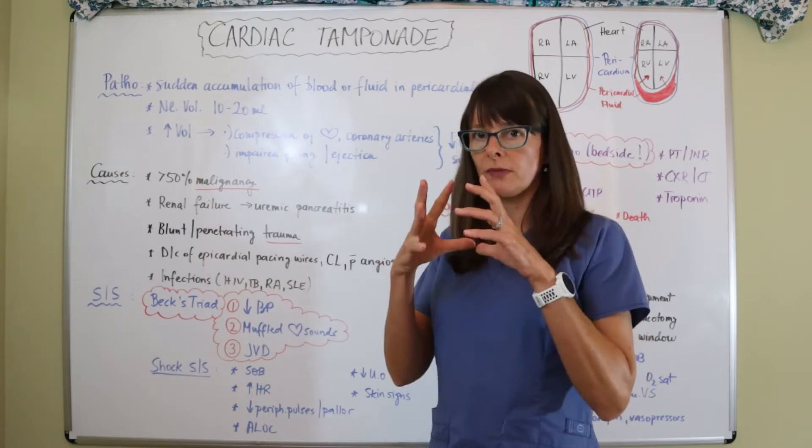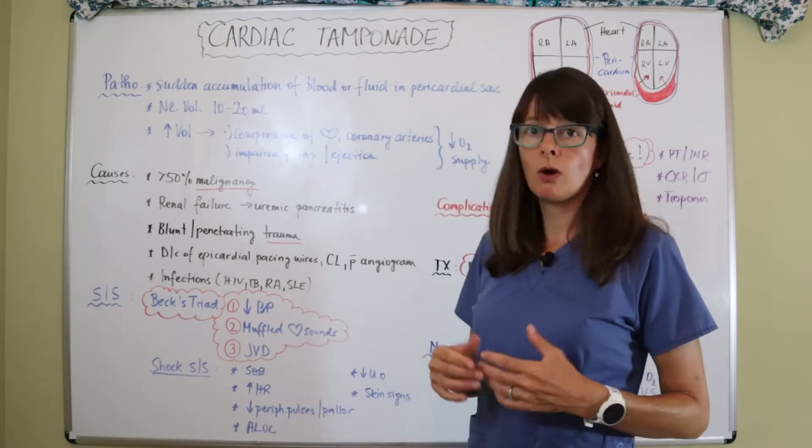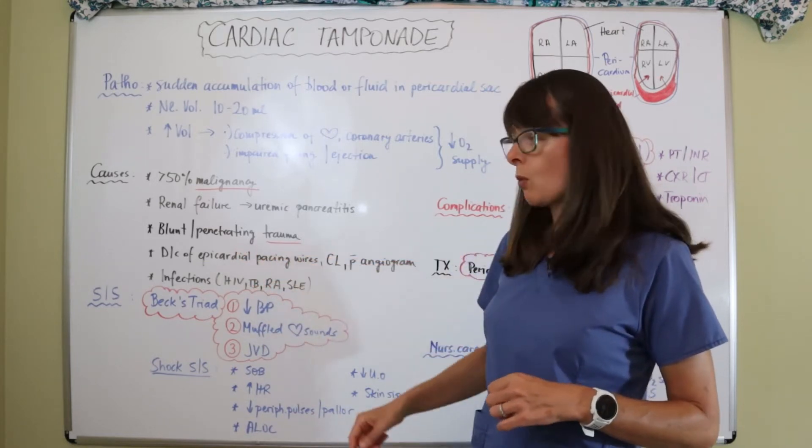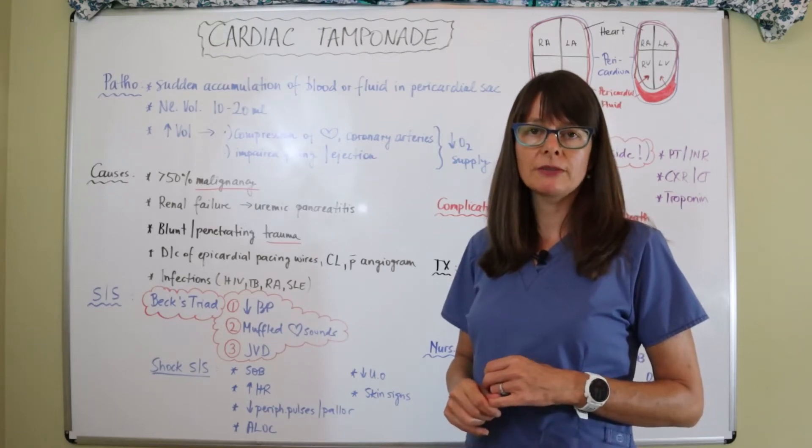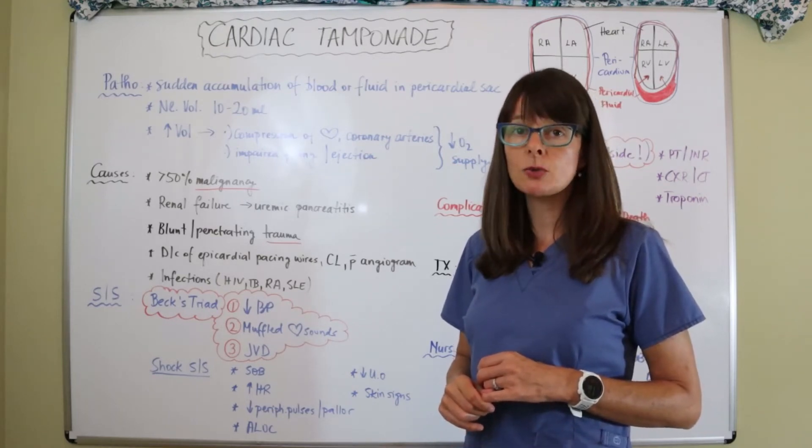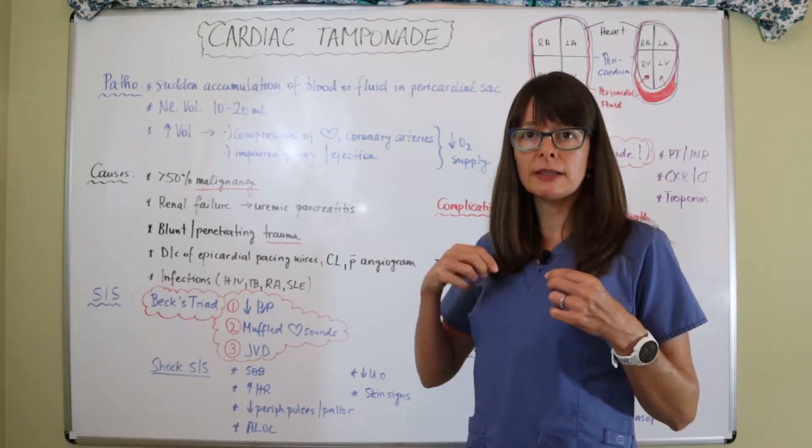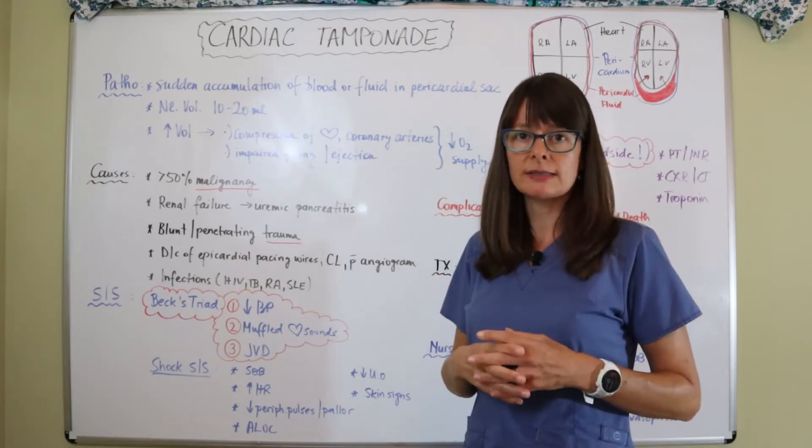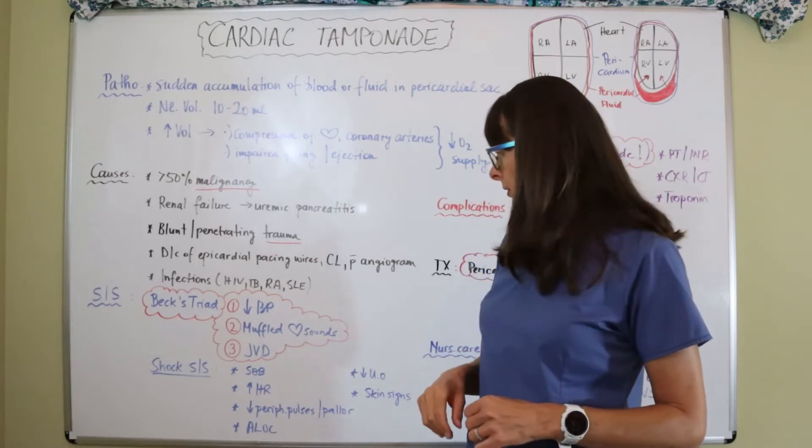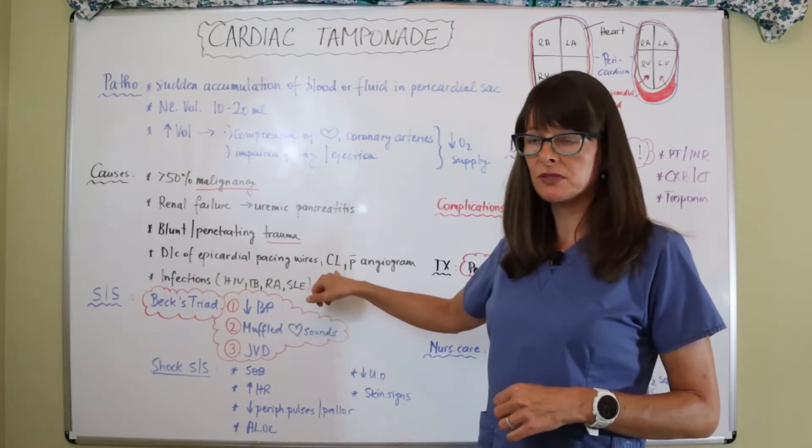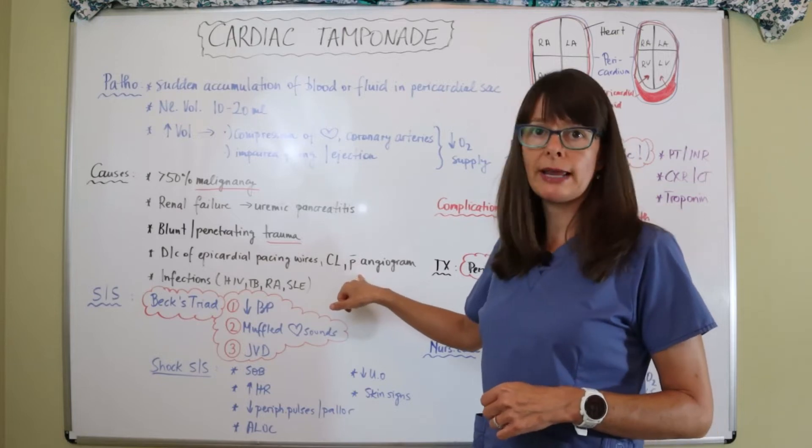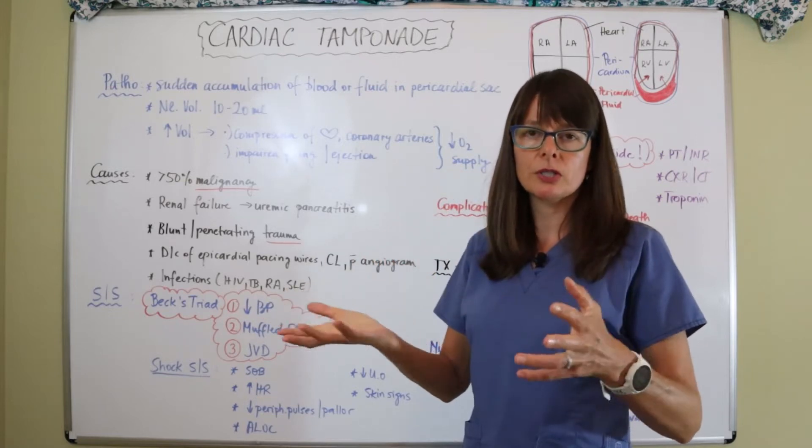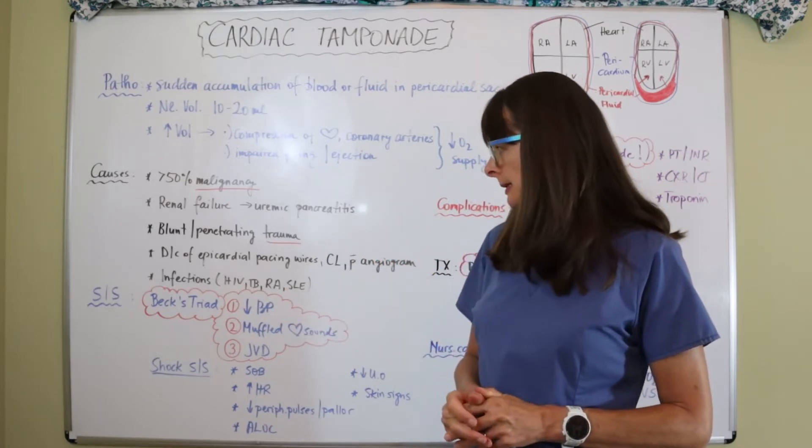Hospital induced causes can be the discontinuation of pericardial pacing wires. These are usually used after the patient undergoes a bypass surgery. Eventually they have to be removed, but with the removal of those the pericardial sac can be nicked and cause bleeding or fluid to accumulate there. But it can also happen with the discontinuation of central lines or after an angiogram as a complication because the heart muscle has been maneuvered or touched to a certain degree during these procedures.